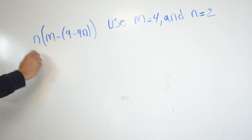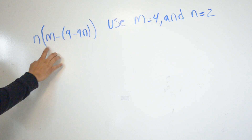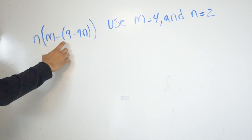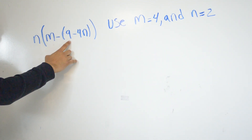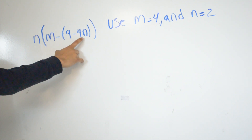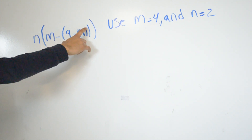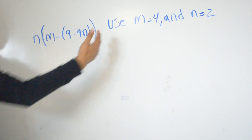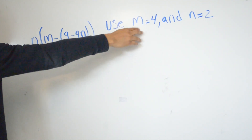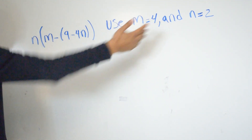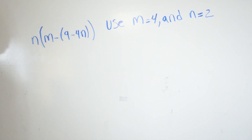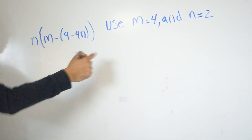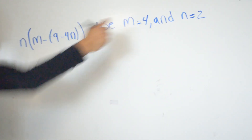We have n times parentheses — and minus parentheses 9 minus 4, close parentheses. Now we're going to do the same thing we always do: wherever we see the letters, we take whatever numbers they give us and substitute those numbers into those variables. So for n it's going to give us 2.